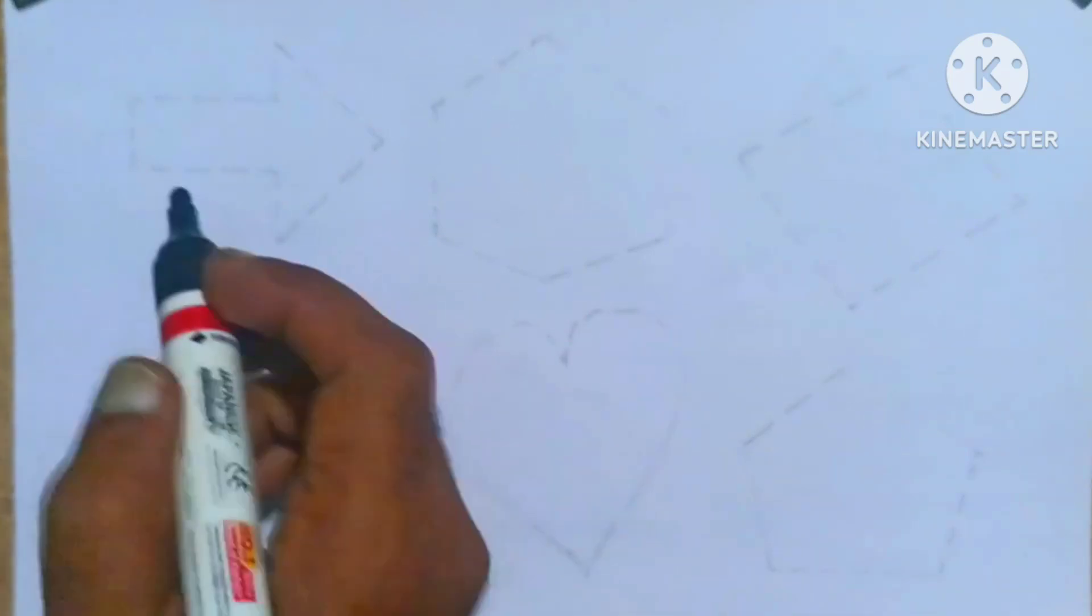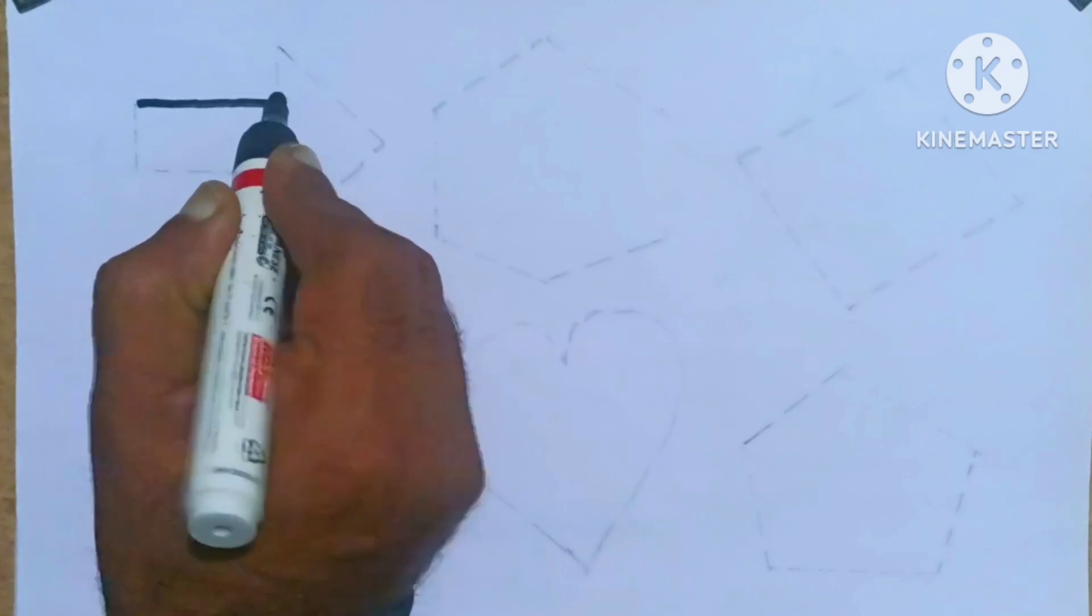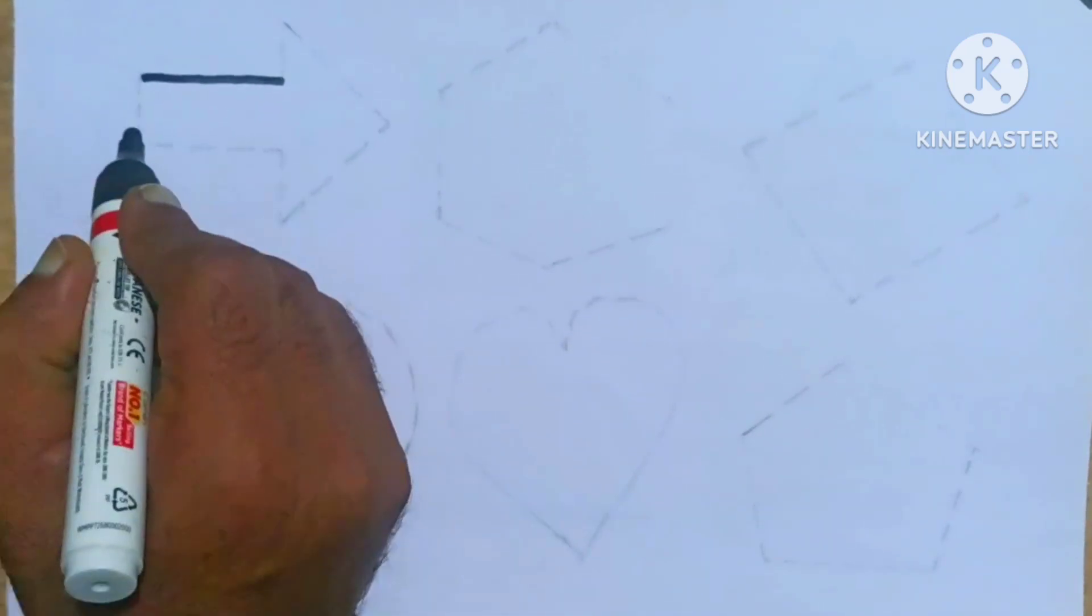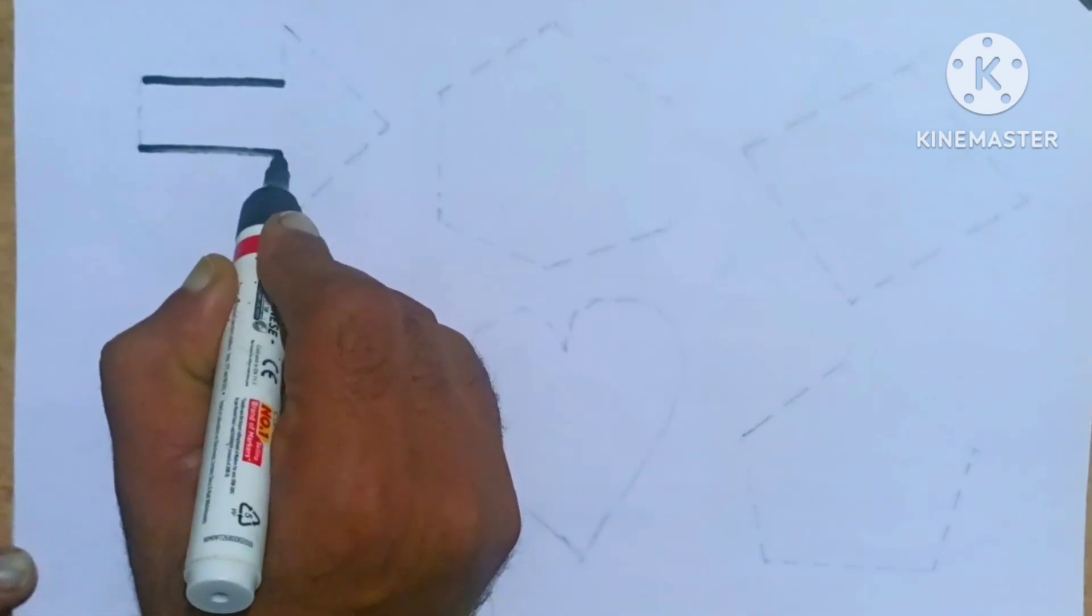Arrow. Which shape is this kids? It's an arrow. Kids say arrow.